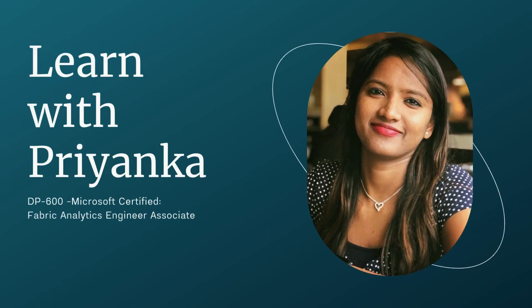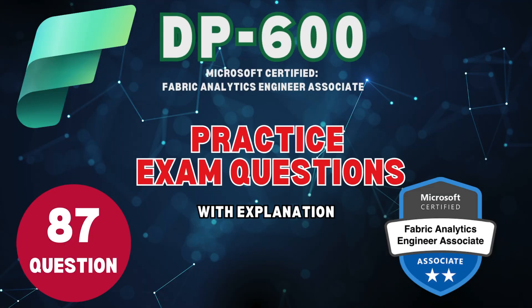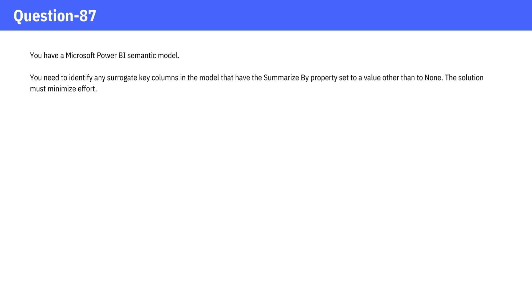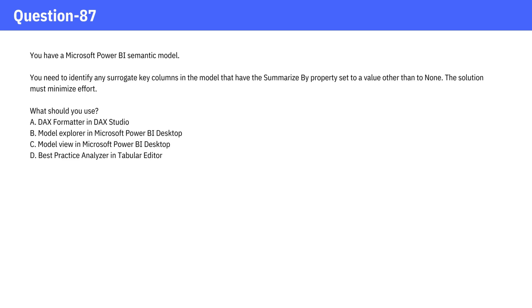Welcome to Learn with Priyanka. Question 87. You have a Microsoft Power BI semantic model. You need to identify any surrogate key columns in the model that have the Summarize by Property set to a value other than none. The solution must minimize effort. What should you use?